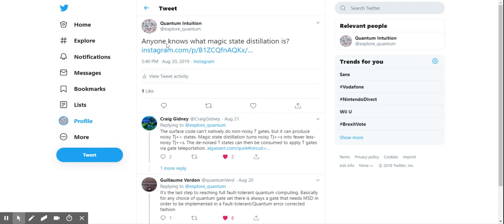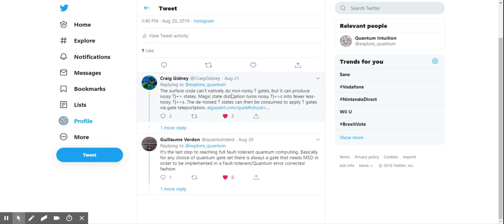Anyone knows what magic state distillation is? Actually Craig answered saying the surface code can't natively do non-noisy T gates, but it can produce noisy T plus gate estates. Magic state distillation turns noisy T pluses into fewer less noisy T pluses. The denoised states can then be consumed to apply T gates via gate teleportation.